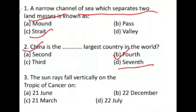The answer is fourth. Now, the sun rays fall vertically on the Tropic of Cancer on a specific date. You will know that the sun rays fall vertically on the Tropic of Capricorn on the 21st of March.